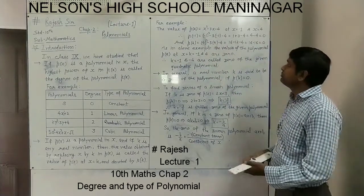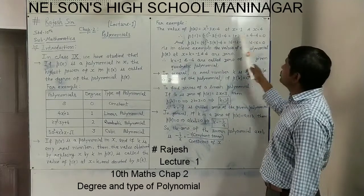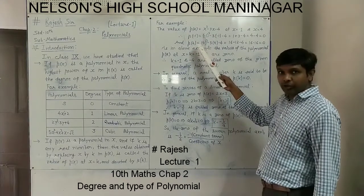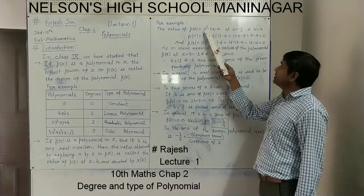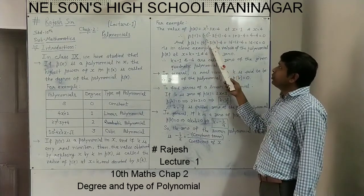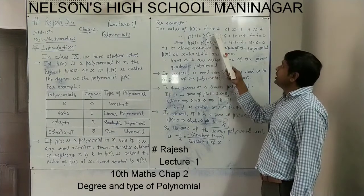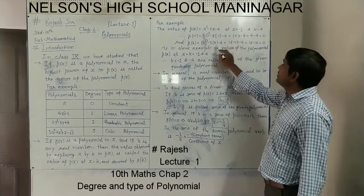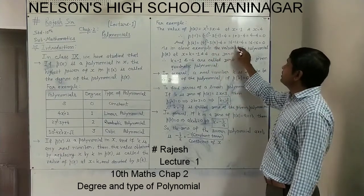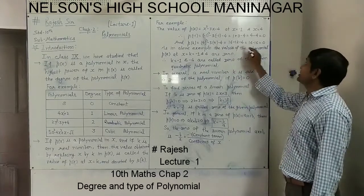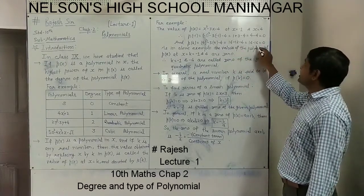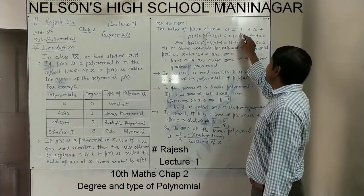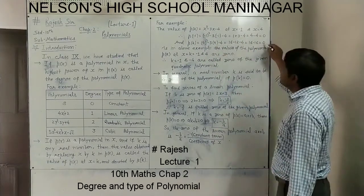Similarly at x equal to 4, we find the value. p(x) becomes p(4); wherever x appears we put 4. So 4 squared minus 3 times 4 minus 4: 4 squared is 16, minus 3 times 4 is minus 12, and minus 4 as it is. So 16 minus 12 minus 4 equals 16 minus 16 equals 0. Again we are getting 0. So the value of p(x) at x equal to minus 1 and x equal to 4 are both 0.